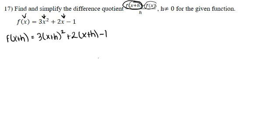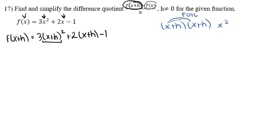Our first step is to FOIL out the (x plus h) squared term. We expand it as (x plus h)(x plus h). Using FOIL — first, outer, inner, last — x times x gives x squared, x times h gives xh, h times x gives xh, and h times h gives h squared.